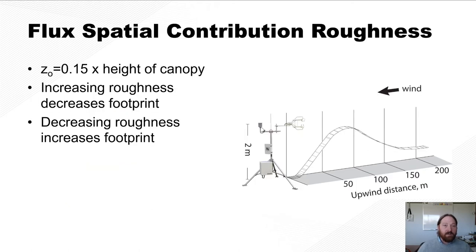Another contribution to your footprint is the surface roughness. So the surface roughness can be estimated by 0.15 times the height of the canopy. So as that canopy gets higher and higher up, your roughness basically decreases your footprint. So the rougher the canopy is, then the footprint influence becomes less. Or sorry, the contribution of the footprint occurs at a shorter distance, okay? So the ribbon is moved closer to the sensor.